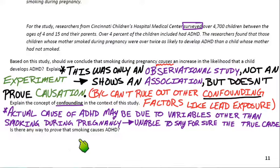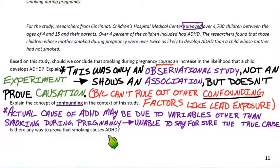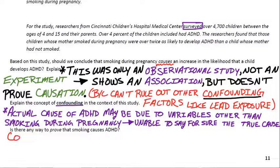Is there any way to actually prove that smoking during pregnancy causes ADHD? We would have to conduct an experiment — but is that even plausible? The answer is no, because to prove it you would need to assign a group of mothers to actually smoke during pregnancy and compare them to a group that didn't smoke, then see if the smoking group had a higher rate of ADHD. That would be a way to prove it, but obviously it's an unethical thing to do.